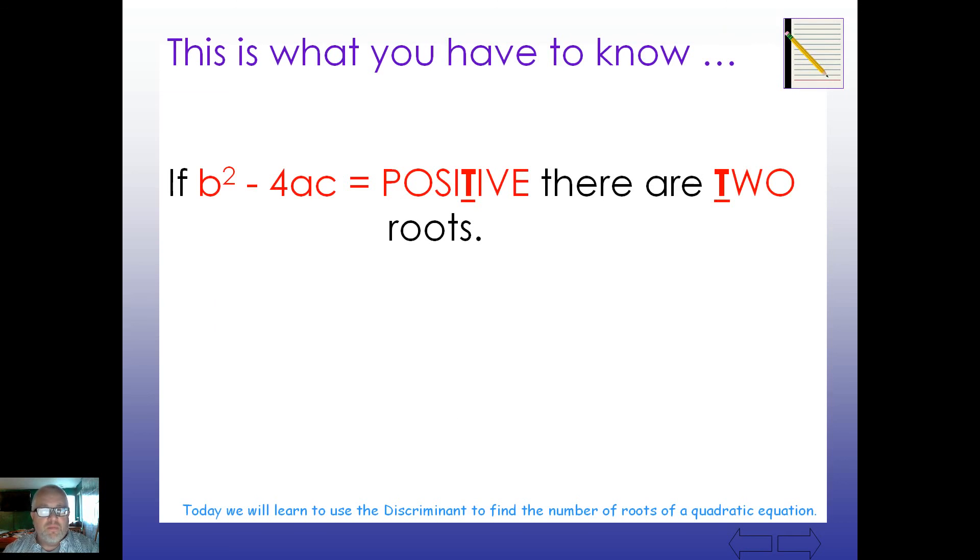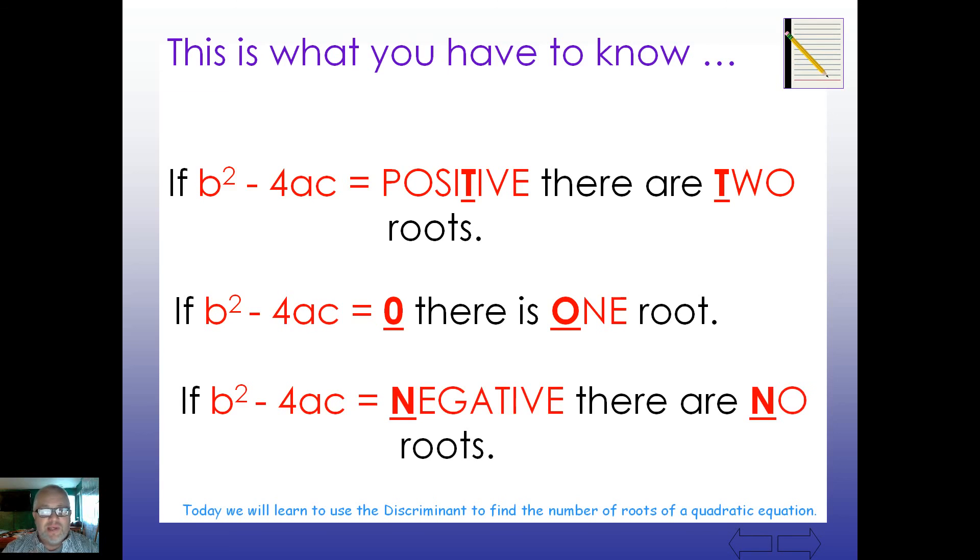All right. So, this is what you have to know. If the discriminant is positive, notice there's a t there. Positive, there are two roots. If the discriminant is 0, the number 0 looks a lot like the letter O. There's one root. And if the discriminant is negative, negative, no roots. So, if you want to kind of play that matching game there, positive with a t, there's two roots. 0 looks like an O in the alphabet. Negative, no roots whatsoever.